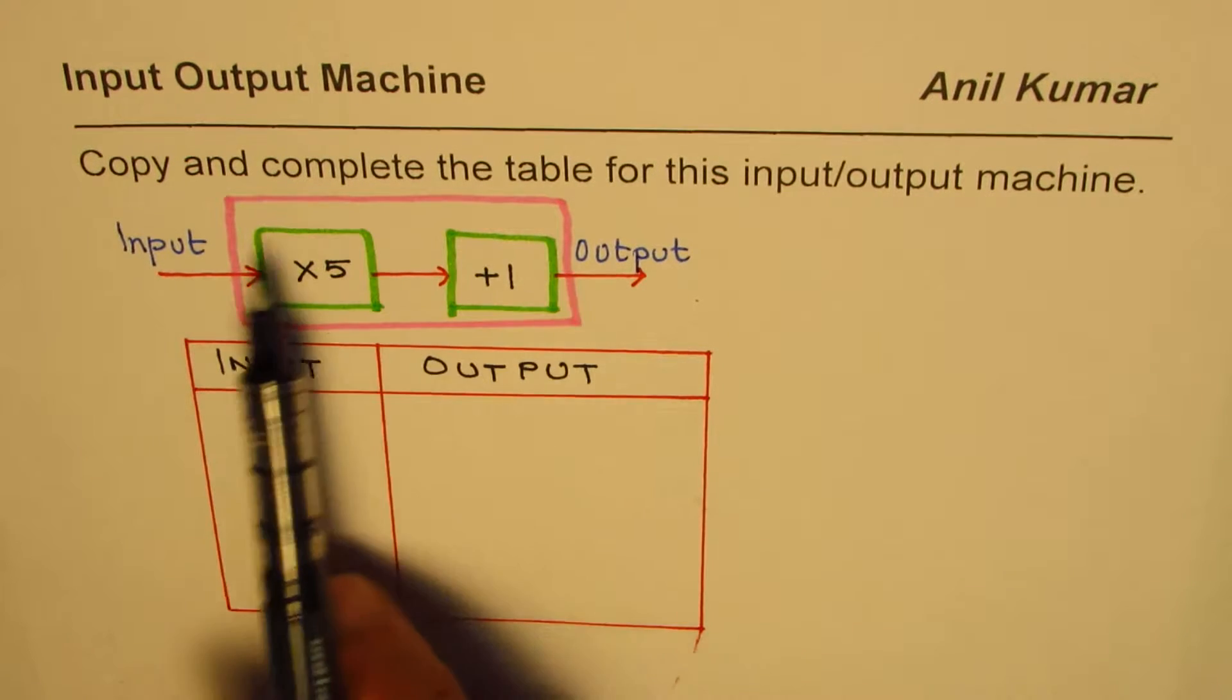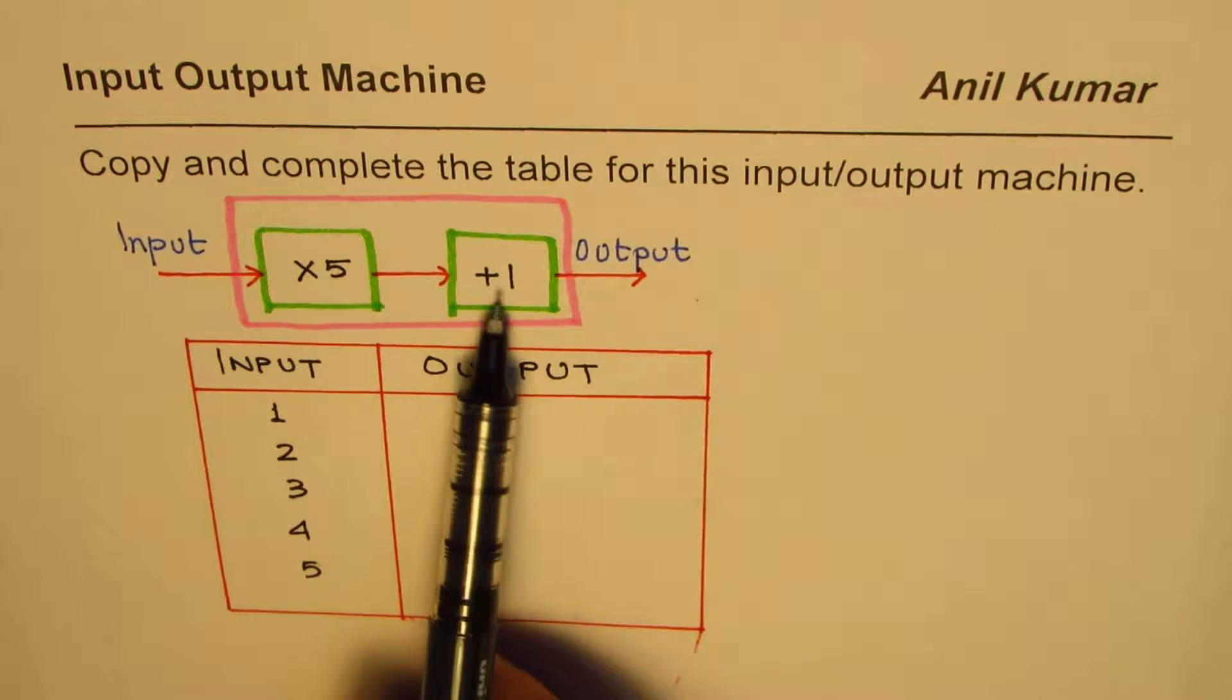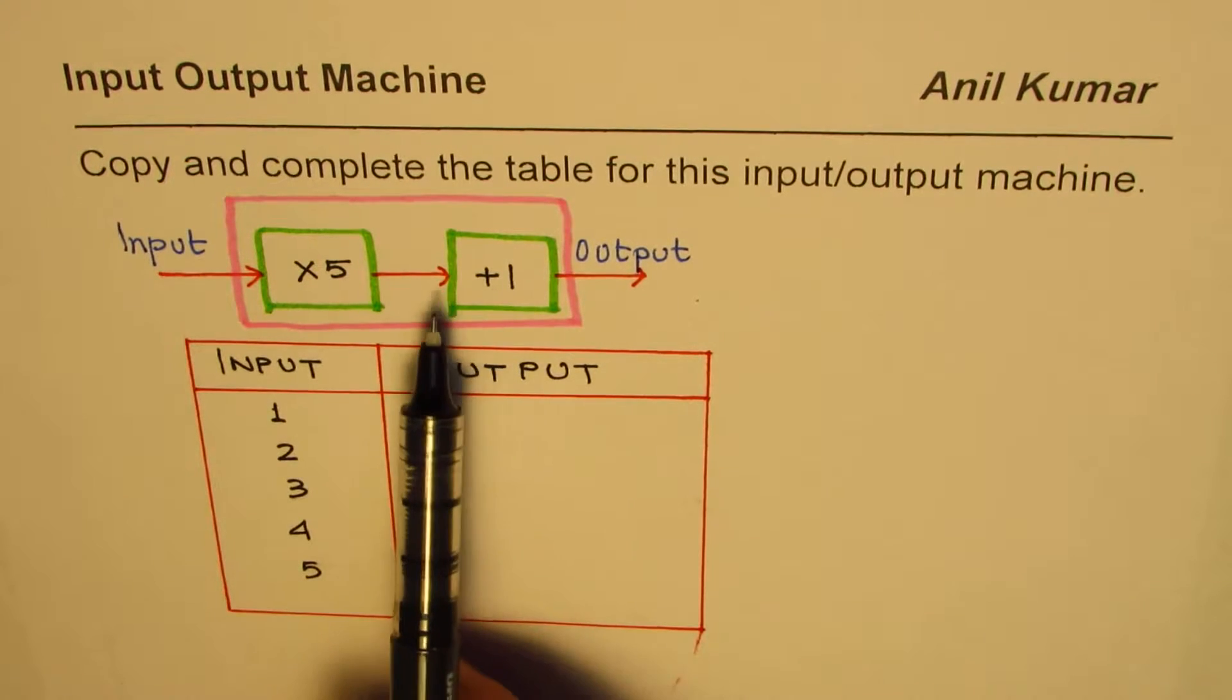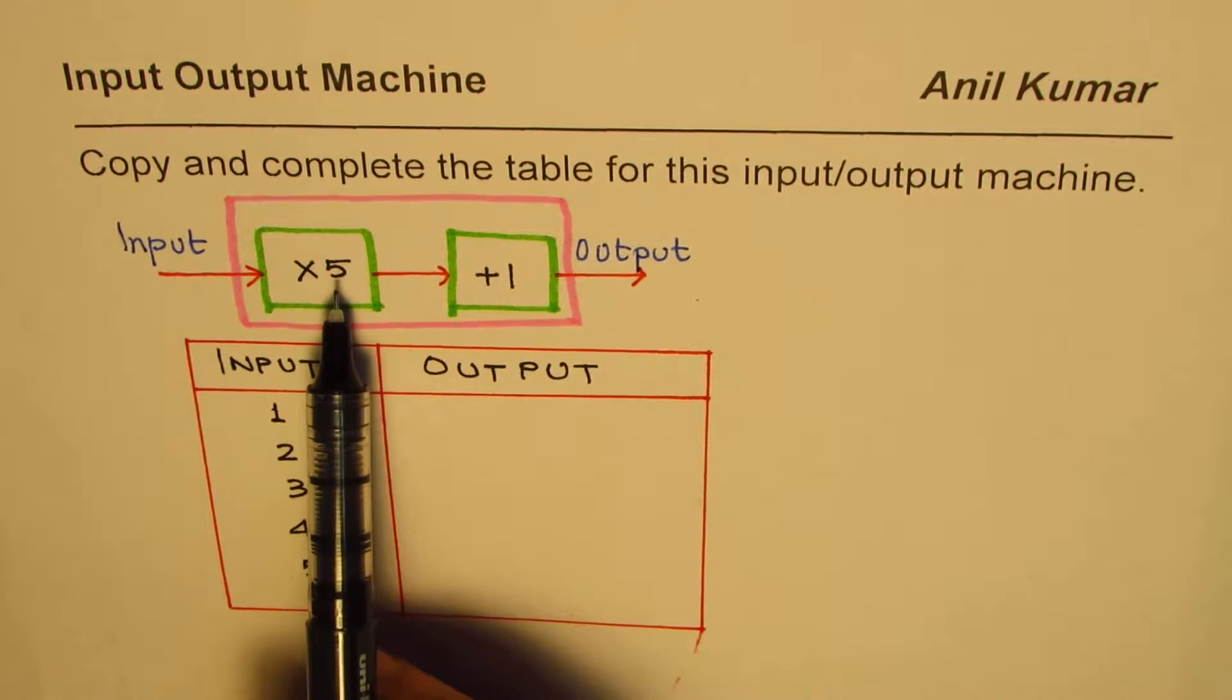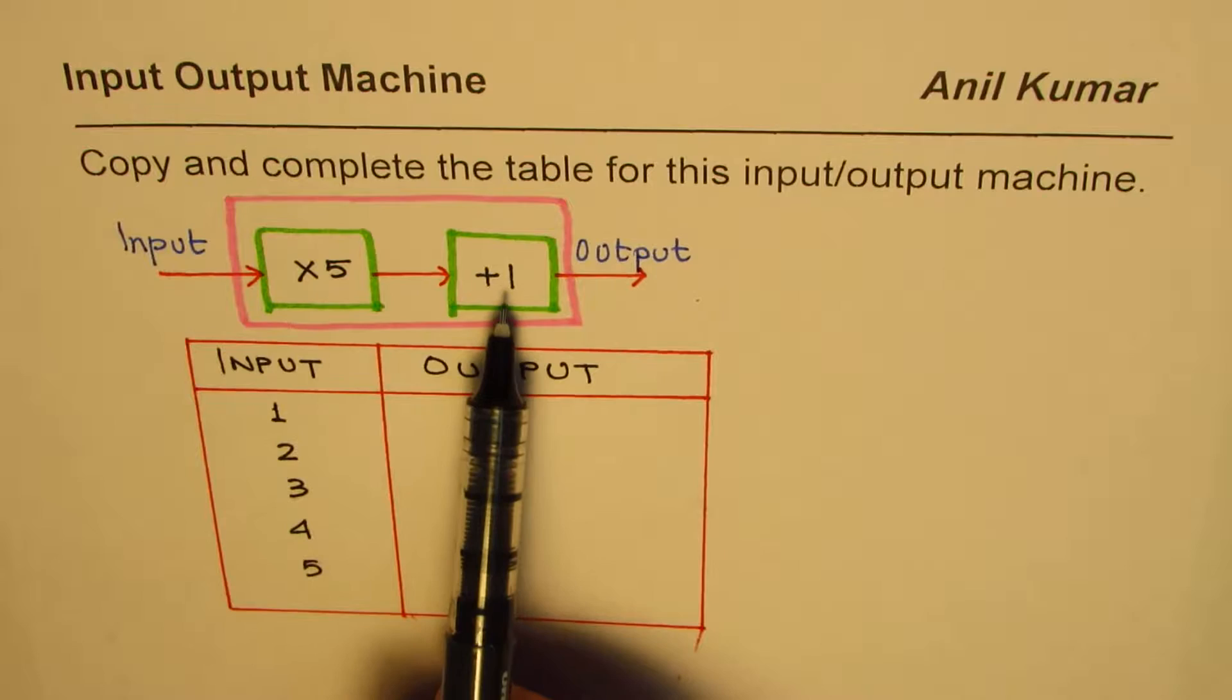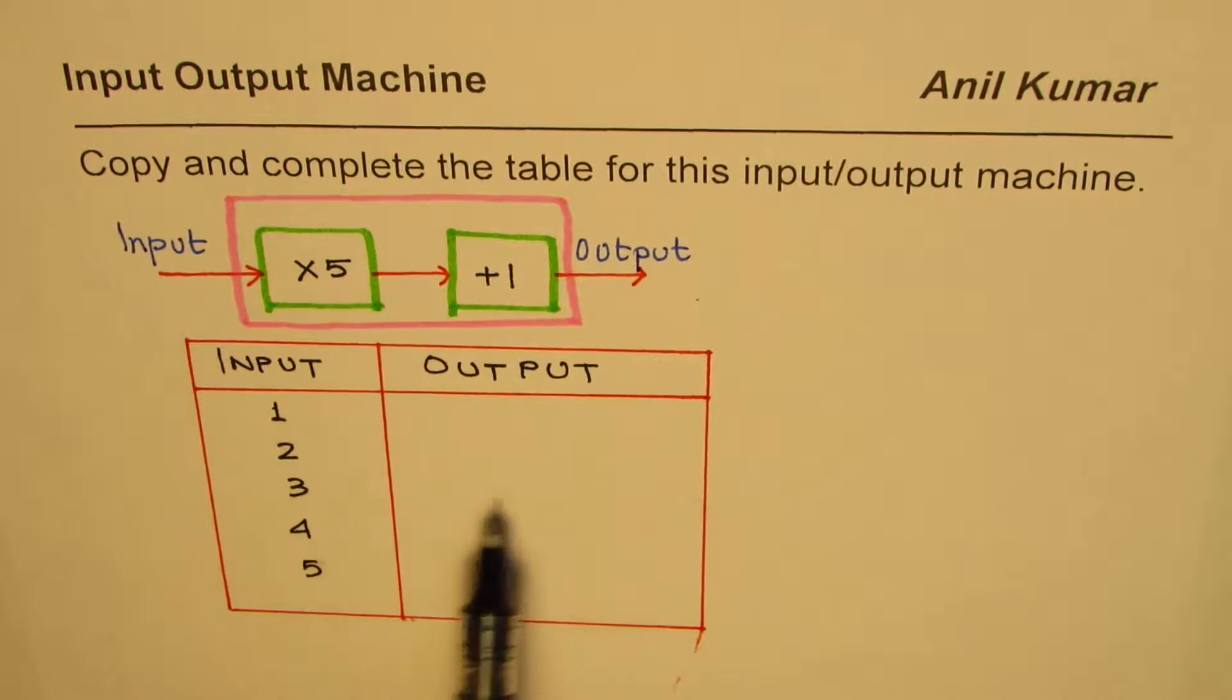The input goes into the machine and the operations performed here are times 5 plus 1. On any number which you input, it will be multiplied by 5 and then 1 is added to get the output. Now use this operation to complete this table.